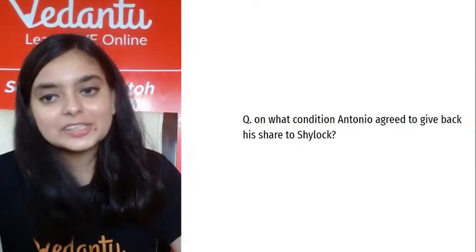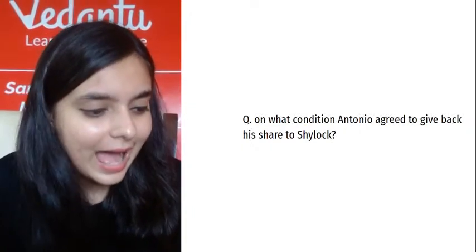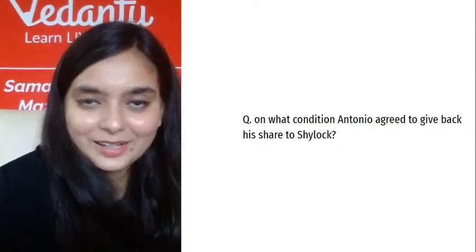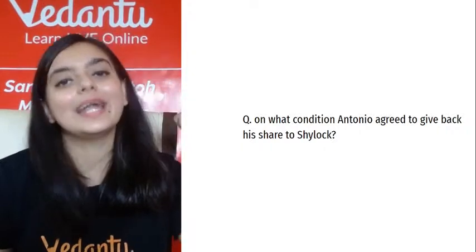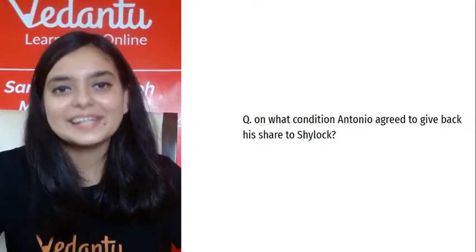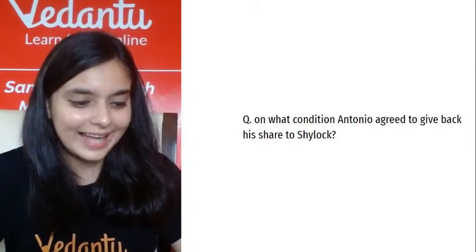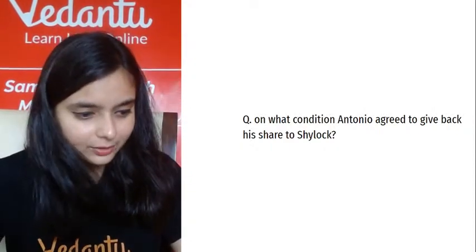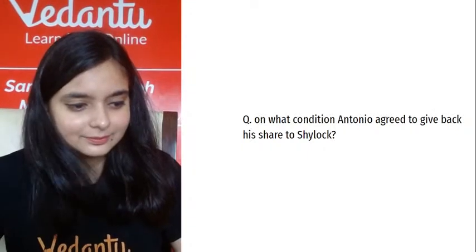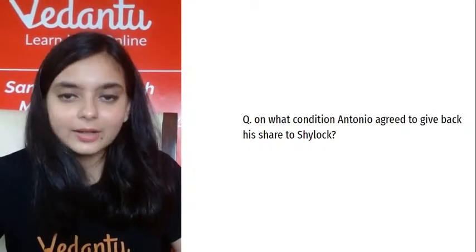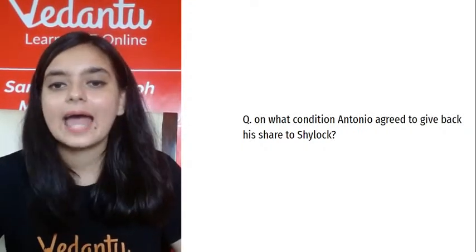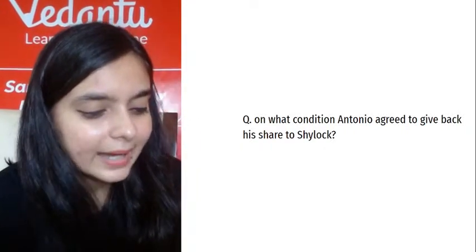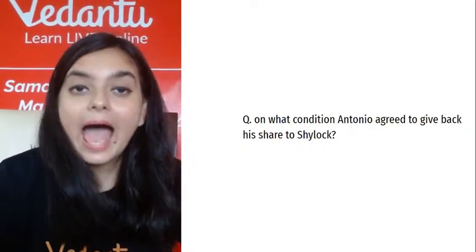Shylock must also bequeath all his goods to Jessica and Lorenzo. The question for you: on what condition did Antonio agree to give back his estate to Shylock? The answer: Antonio agreed to give back his estate if Shylock converts to Christianity and leaves all his wealth to Lorenzo and Jessica after his death. Two conditions.